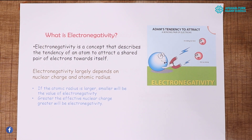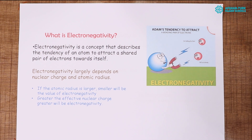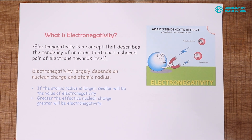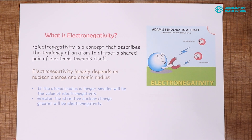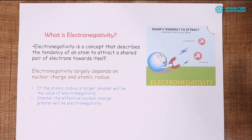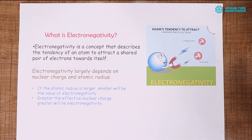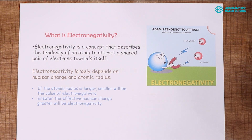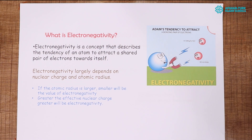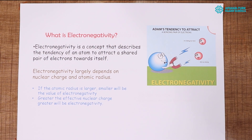Electronegativity plays an essential and important role in chemical reactions. If an atom is electronegative, it attracts electrons; if it is less electronegative or more electropositive, it gives electrons. So let's study what electronegativity and electropositivity are.